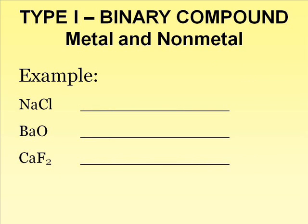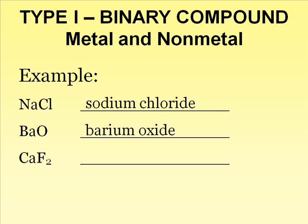Here are a few examples. The first example contains just two elements, thus it is a binary compound. Since sodium is a metal and chlorine is a nonmetal, it belongs to the Type 1 category. Its name is sodium chloride. The second example is named barium oxide. We drop the -ygen from oxygen and change the ending to -ide.